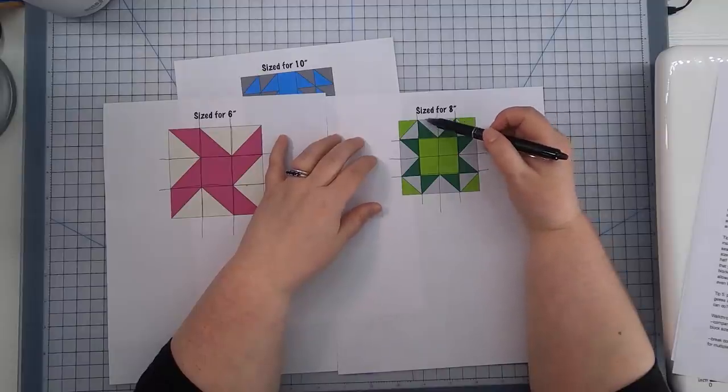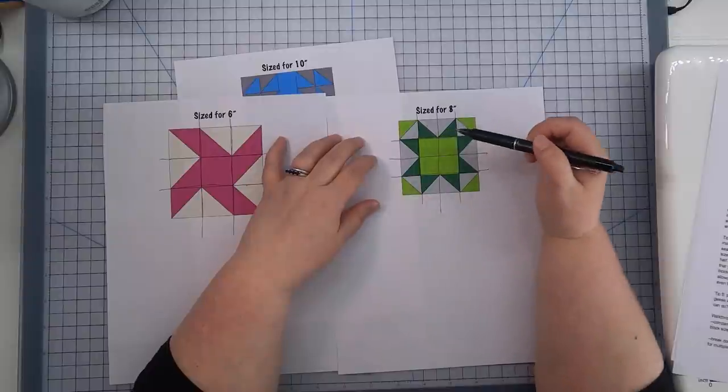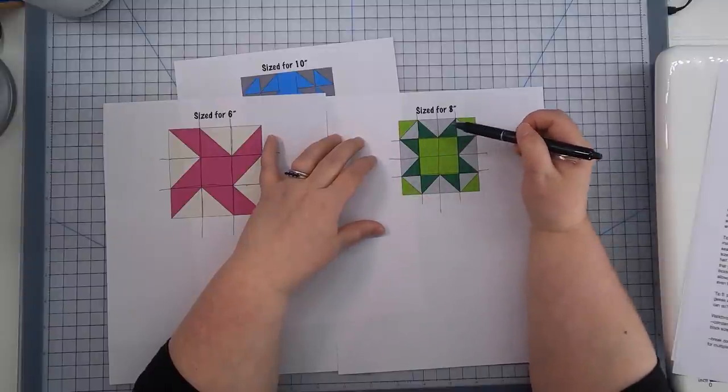So this corner unit, this half square triangle unit, is the basis smallest unit of this block. And it dictates the size of the rest of the grid. And this also points out another construction issue. You could make this unit as a flying goose, or you could make two half square triangle units. And that's just a construction decision that you can make.